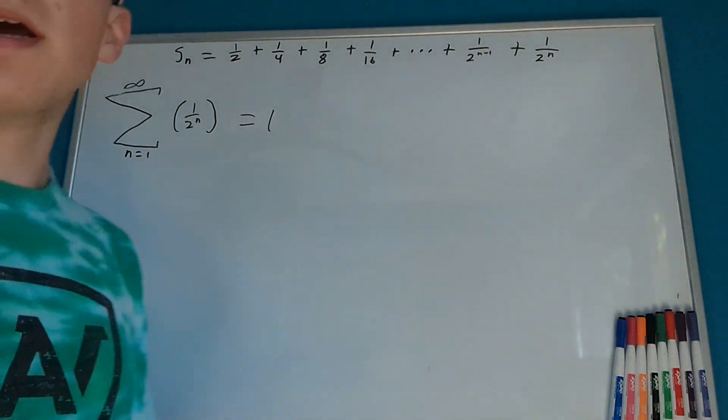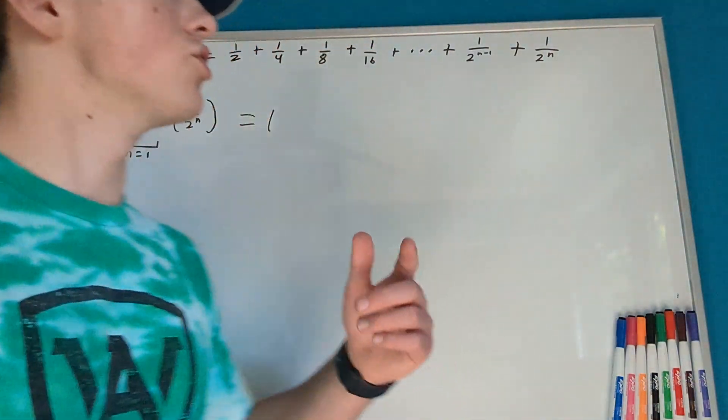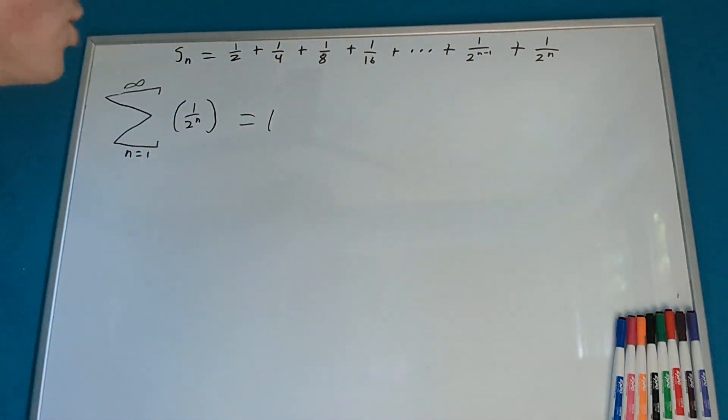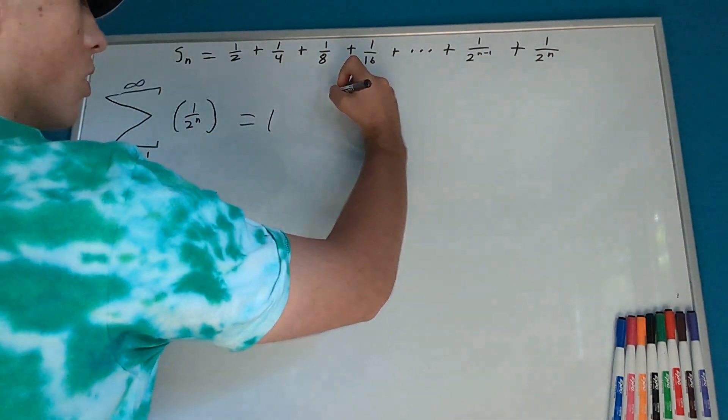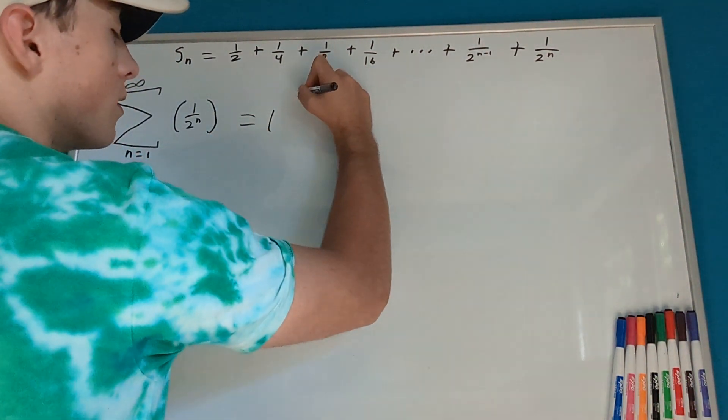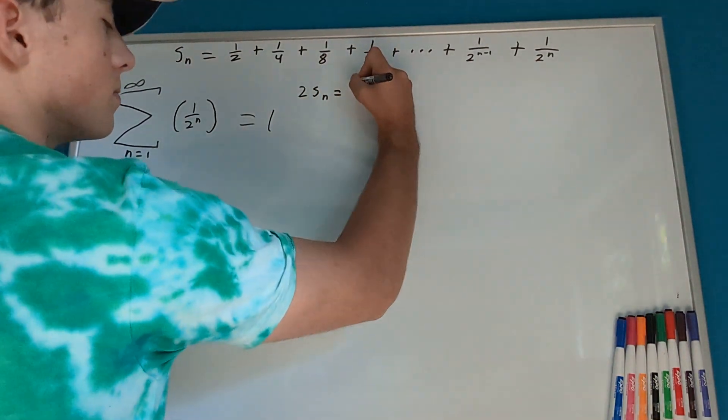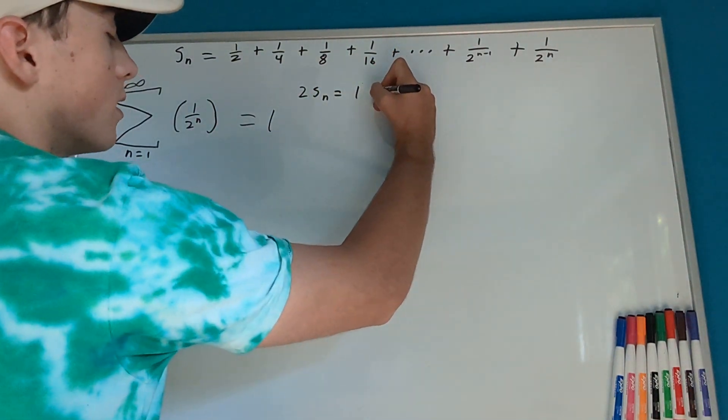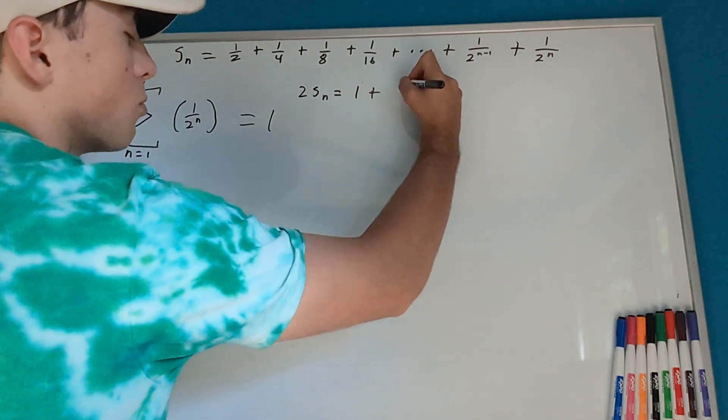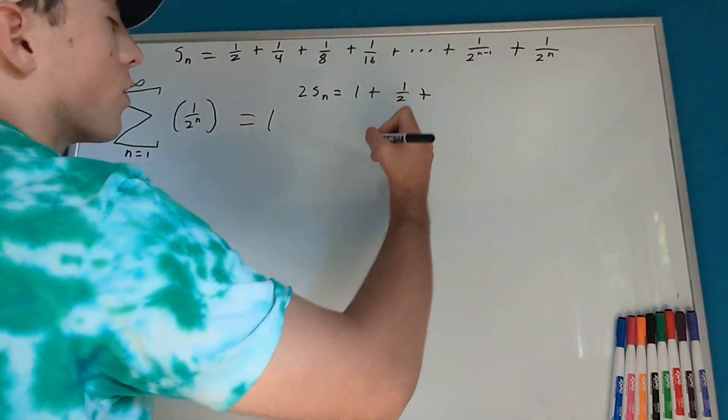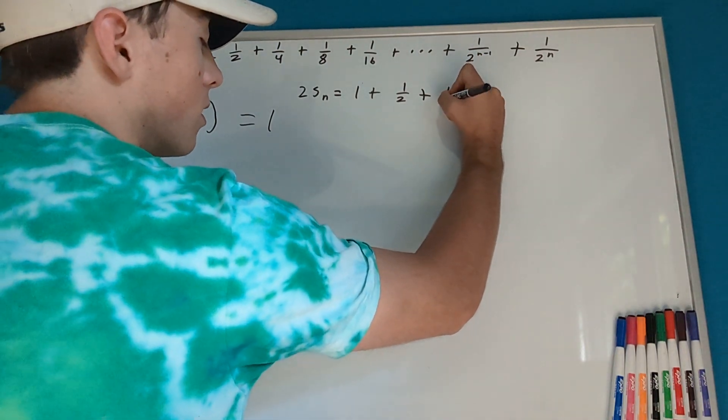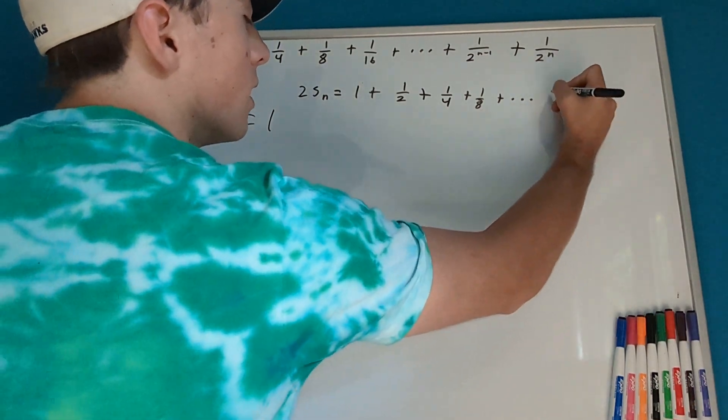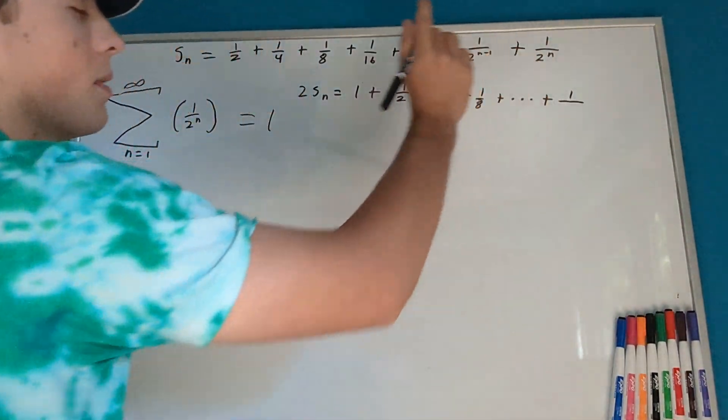So, our first step in proving this is we want to take our original series that we had up here, and what I want to do is multiply both sides by 2. So, we can then say that 2s_n equals, well, 1/2 times 2 is 1, plus 1/4 times 2 is 1/2, plus 1/8, plus we're still going to have dot dot dot, then plus 1 over, well, this one's a little bit trickier.